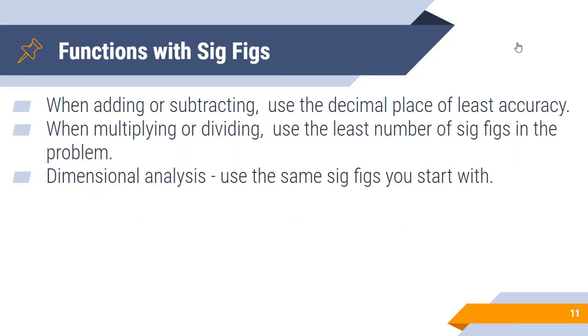It is important in chemistry to be able to perform functions with significant figures. We won't be doing a lot of adding and subtracting, but it is important to know that when we add and subtract, we use the decimal place of least accuracy. When multiplying or dividing, we use the least number of significant figures in the problem. And when you do dimensional analysis, you use the same sig figs that you start with. You'll see what I mean when we work through some practice problems in just a moment.